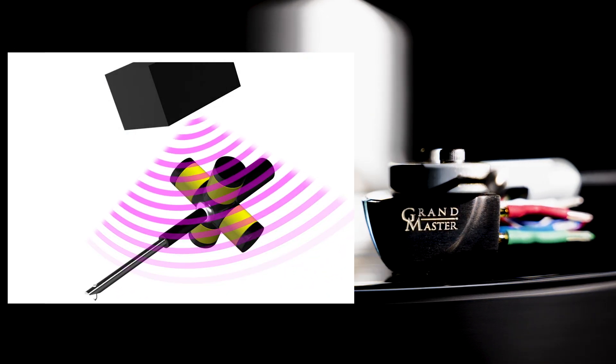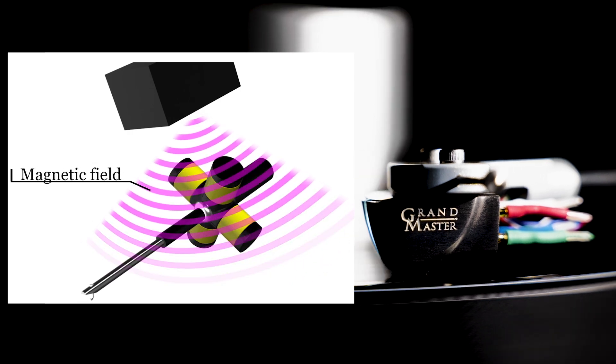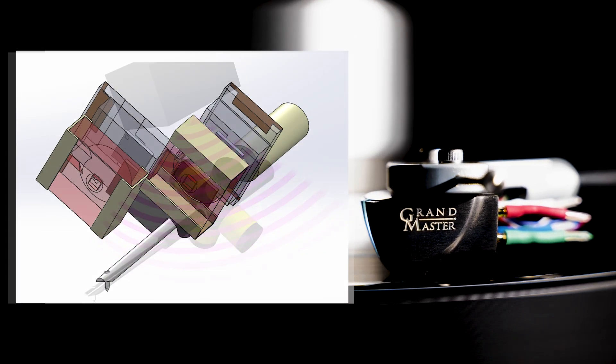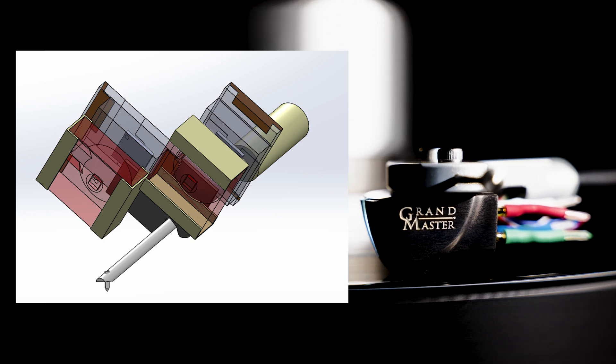MC or MM cartridges use a magnetic field which is a combination of magnets and coils to detect the motion. Optical cartridges use a completely different kind of detection.